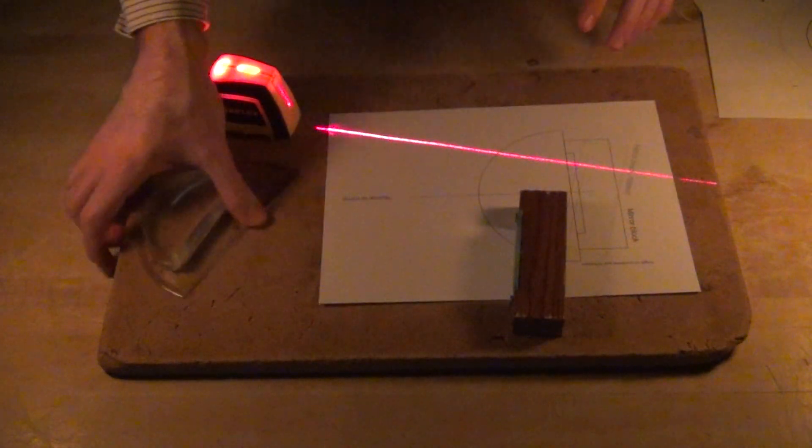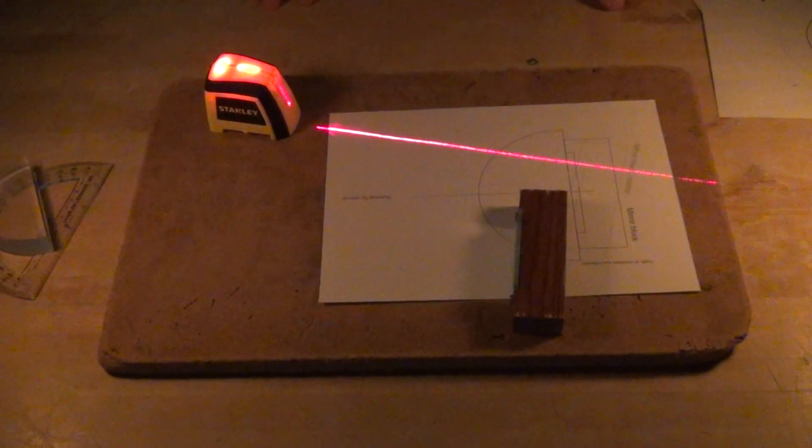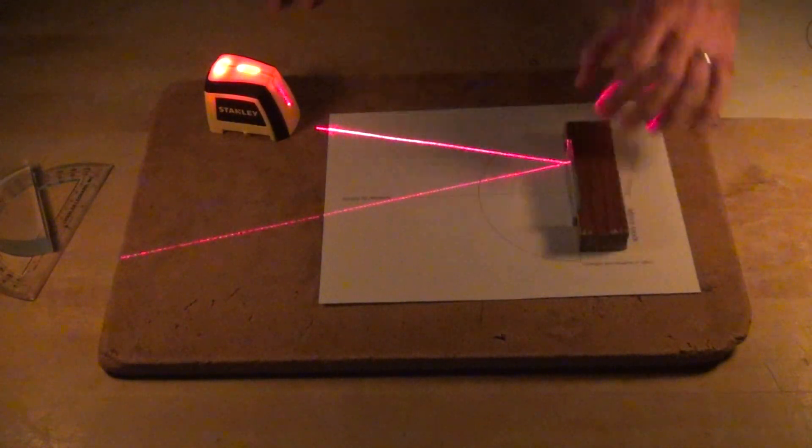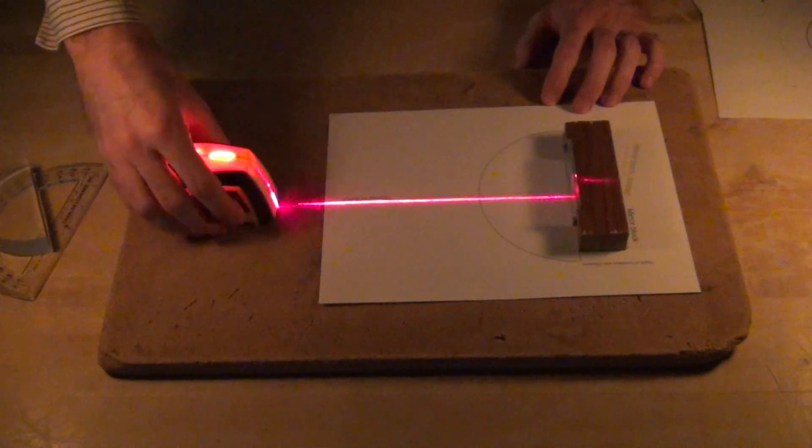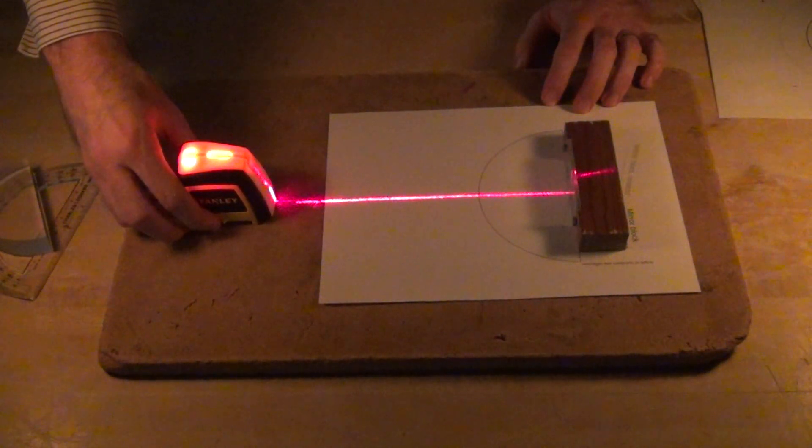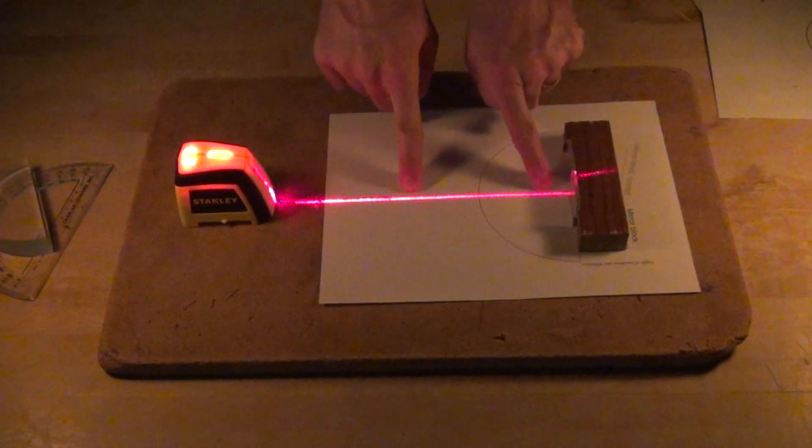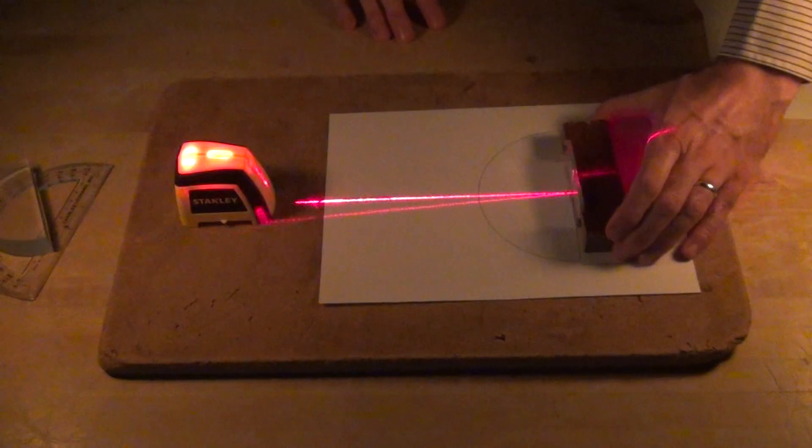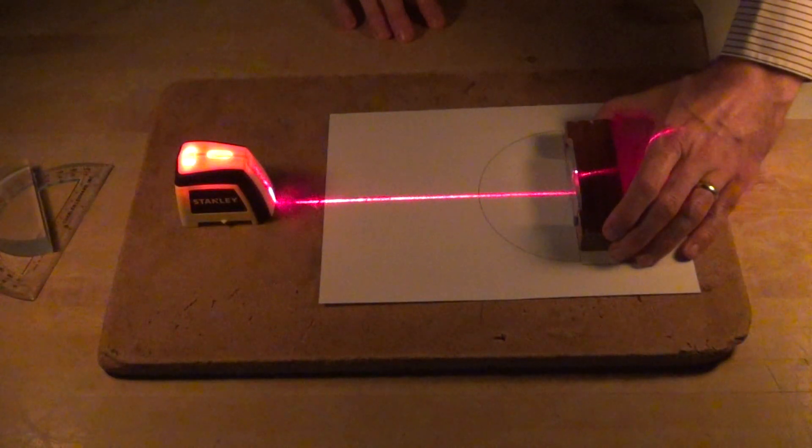We'll start by verifying the law of reflection. Put your mirror on the printout guide. Make sure that you have the mirror well aligned with the guide by sending it in along the normal. It should come straight back out along the normal. You might have to adjust the angle of your mirror to make sure that that's the case.